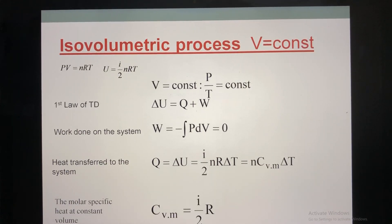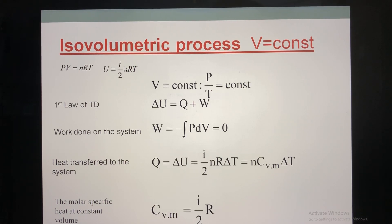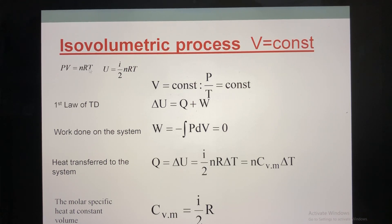Now we move to the next process: the isovolumetric process. Keep in mind, I also remind you of the two formulas: the equation for ideal gas and the formula for internal energy from lecture 4. We always use them. Now, for the isovolumetric process, that means volume is constant. If volume is constant, that means P and T change with respect to time. So I have the equation: P over T is a constant.